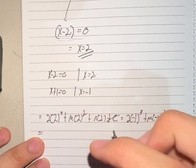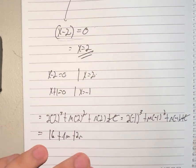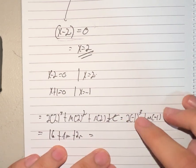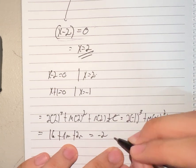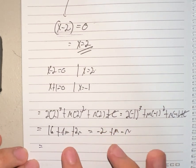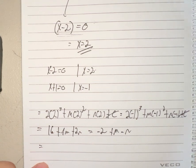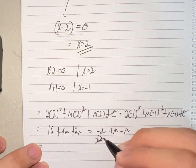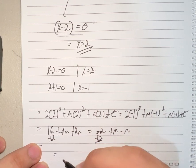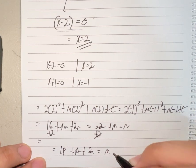So 2 cubed is 8, 16 plus 4m plus 2n equals negative 1 cubed, so that's negative 2 plus m minus n. Now we basically just isolate m and n from coefficients, multiples, or constants. Plus 2 both sides, cancel here, plus 2 here. So it would be 18 plus 4m plus 2n equals m minus n.